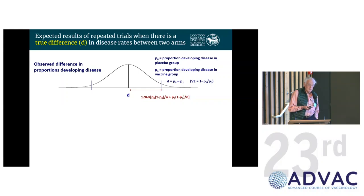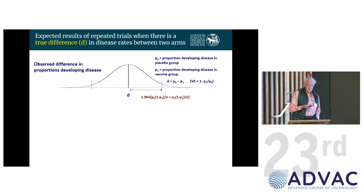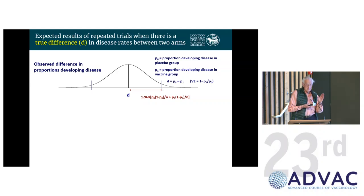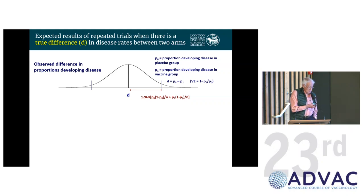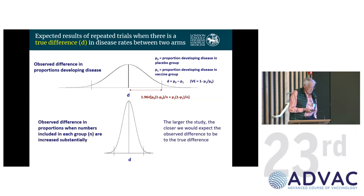Now suppose the true difference between arms is not zero but some value D — a real vaccine effect in terms of difference in proportions developing disease. We'd expect the observed difference to be D, but there will be a distribution around that due to statistical variation, with a slightly more complicated binomial formula accounting for different disease probabilities in each arm. Again, we can shrink that distribution by increasing the trial size.